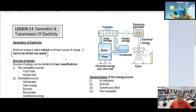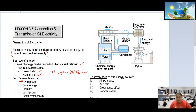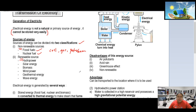Now we look at sources of energy — they have two classifications: non-renewable and renewable. Non-renewable sources include fossil fuels, nuclear fuel, coal, natural gas, and petroleum. Once they're finished, there's no more — you may need to wait thousands of years for them to form again.